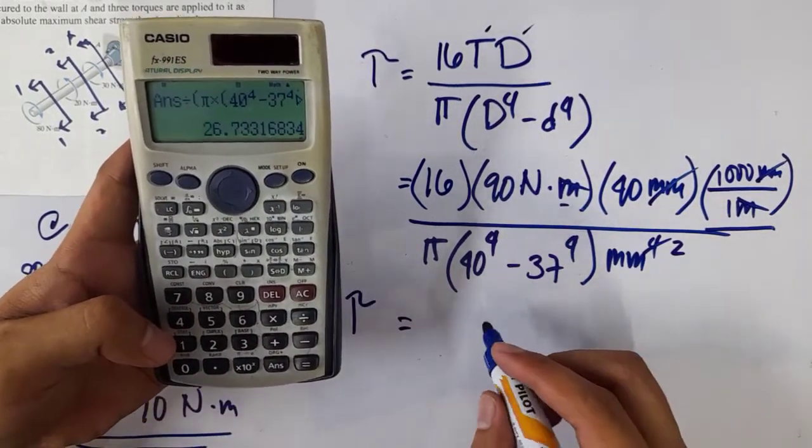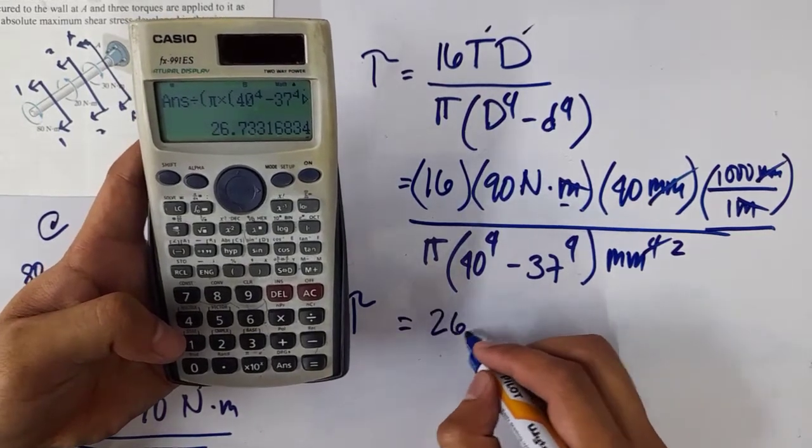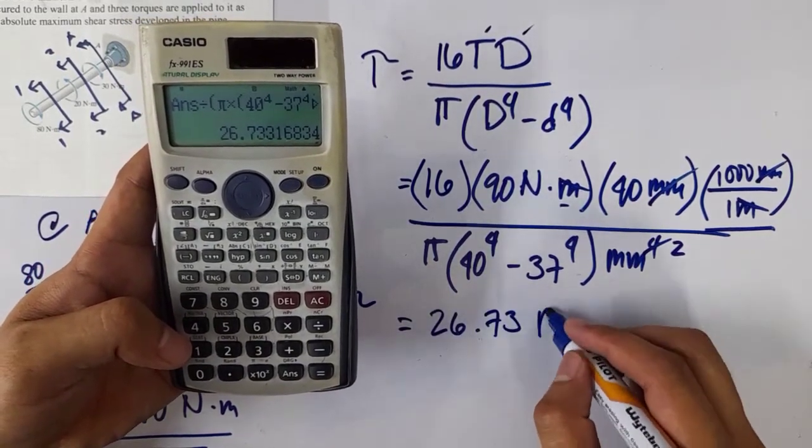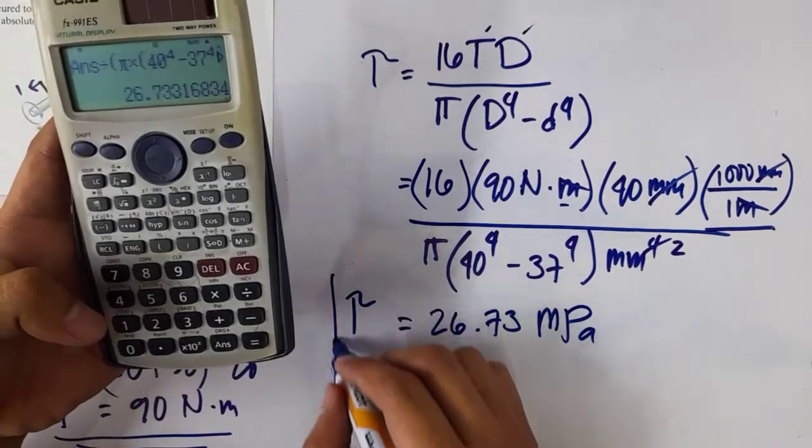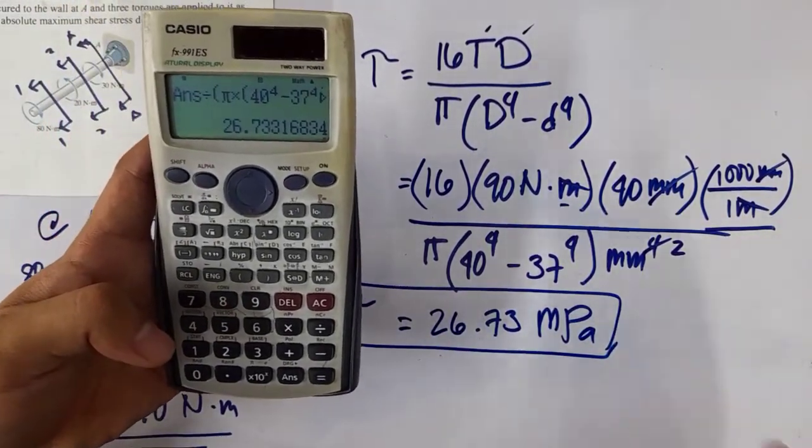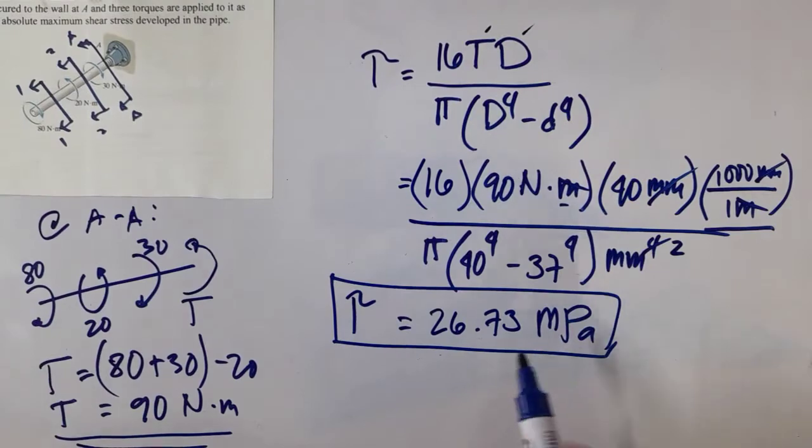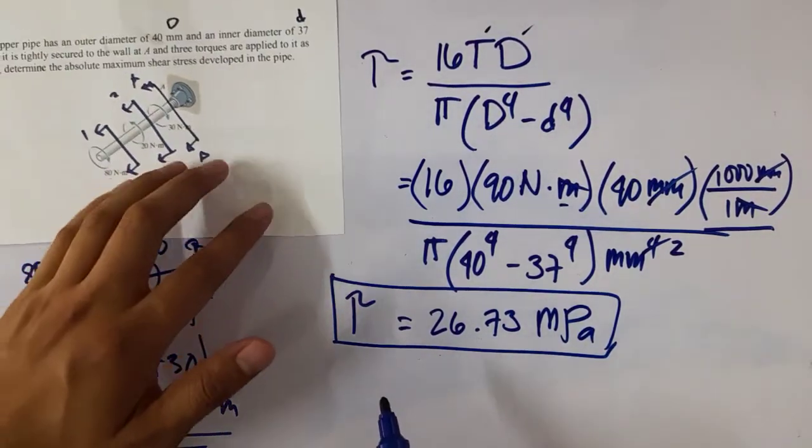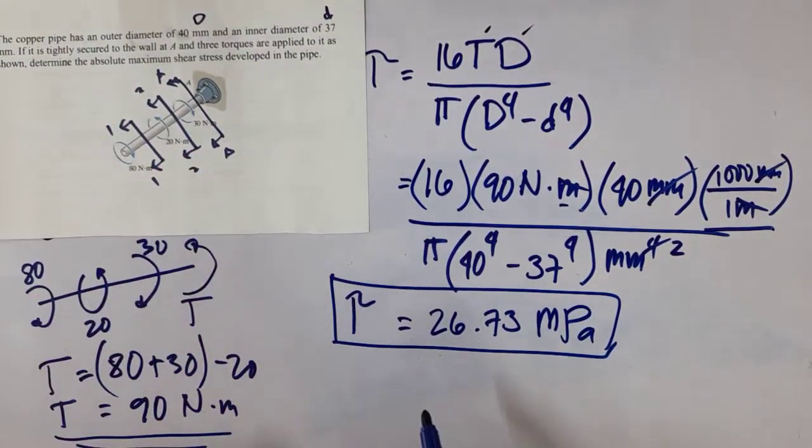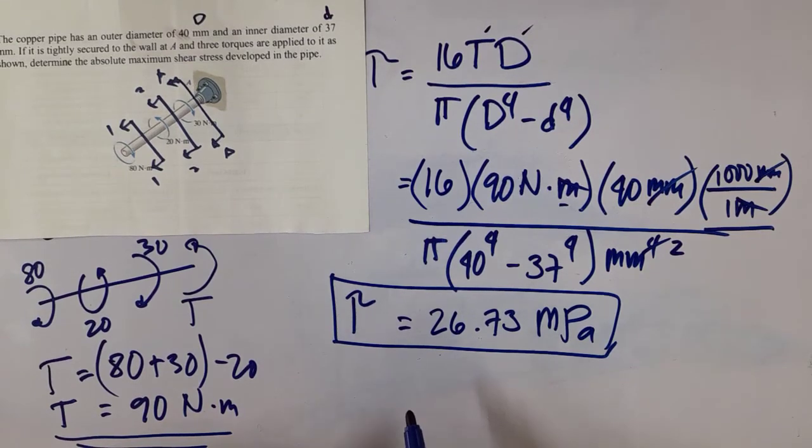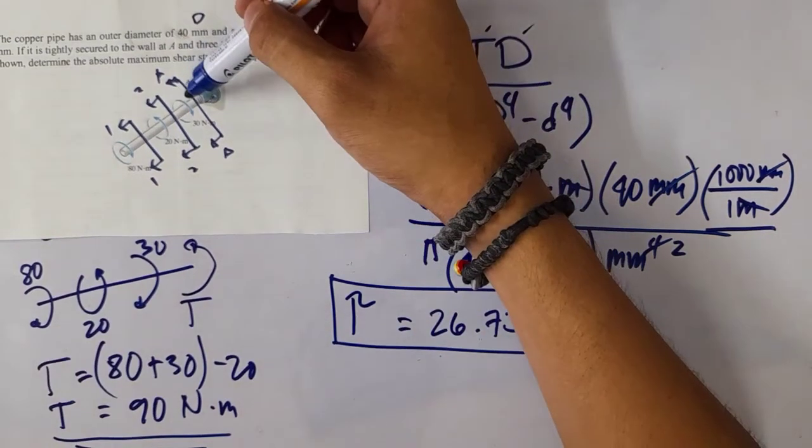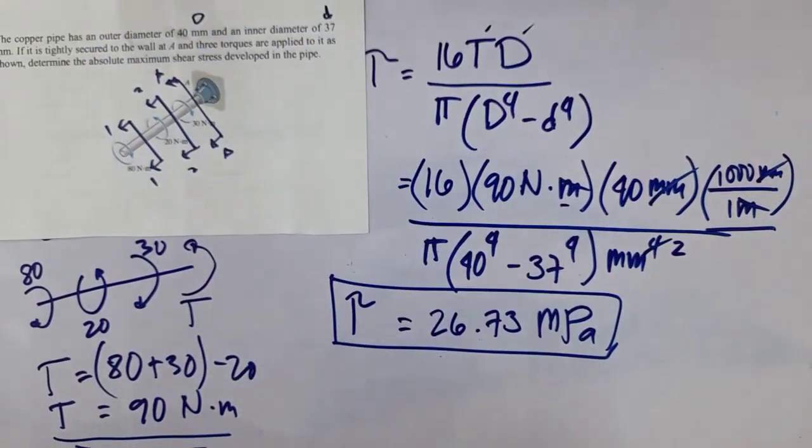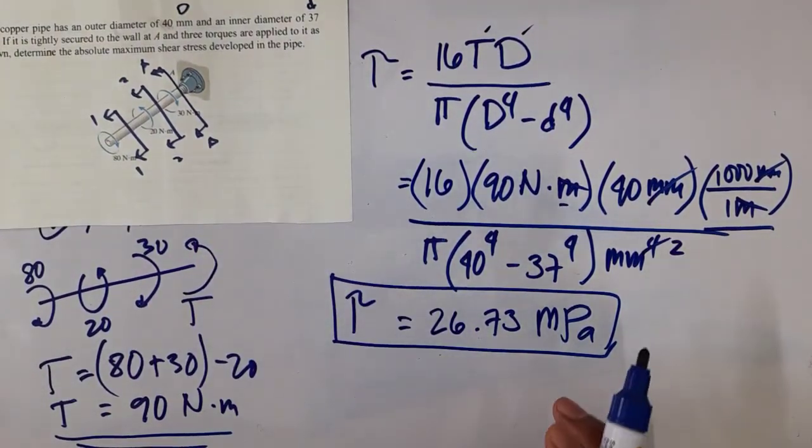So we have 26.73 megapascals. This is the maximum torsional shearing stress on the copper pipe, caused by the 90 N·m internal torque present at this particular section. That's it.